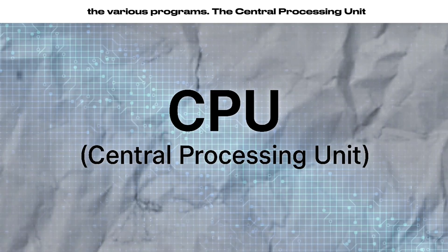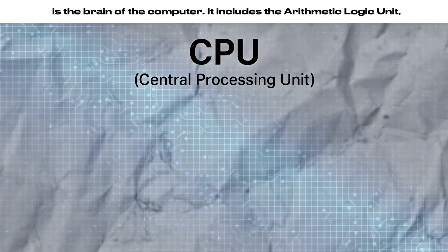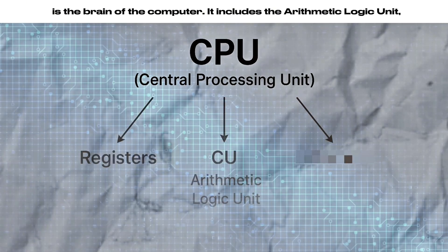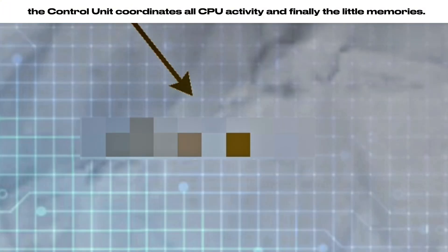The central processing unit is the brain of the computer. It includes the arithmetic logic unit, the control unit that coordinates all CPU activity, and finally the little memories.